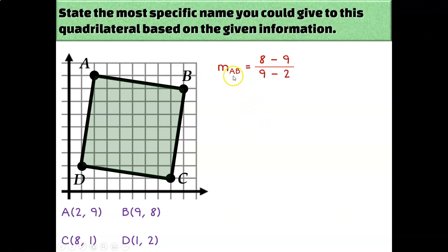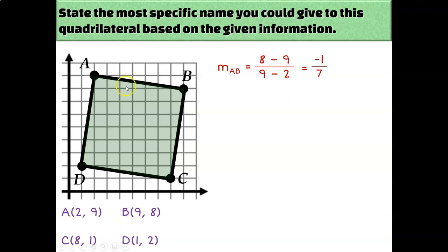Finding the slope of AB: that's (y₂ − y₁)/(x₂ − x₁) = (8 − 9)/(9 − 2), which gives me −1 on top and 7 on bottom. So the slope of AB is −1/7.